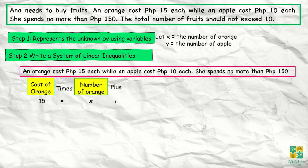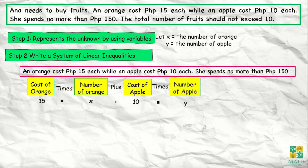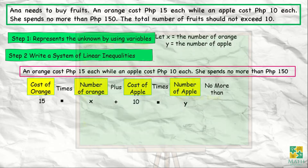Next is we add it to the cost of apple. An apple costs 10 pesos each, and we multiply that to the number of apples, which is y. And then the keyword here is 'no more than.'